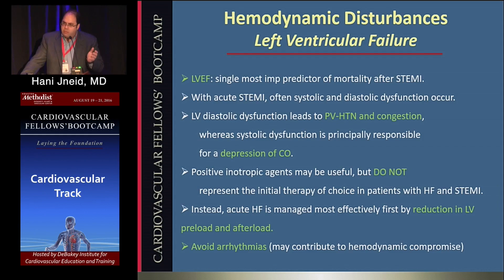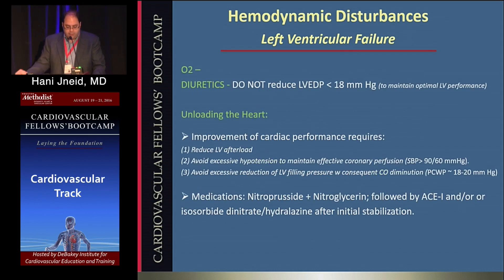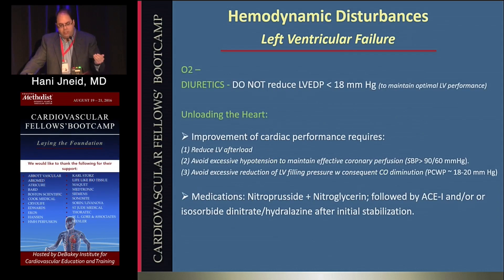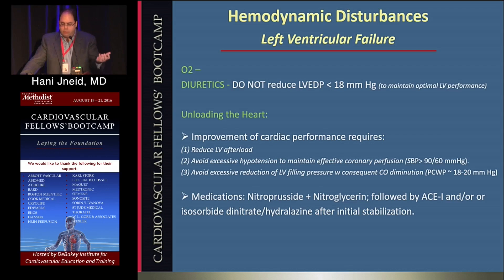When acute heart failure complicates acute MI, positive inotropic agents are not first-line — they are only reserved for very refractory LV dysfunction with ensuing shock. If you have a good blood pressure, you want to unload the heart by reducing preload and afterload while avoiding arrhythmias. Besides mechanical ventilation, oxygenation, and diuresis, avoid excessive hypotension and excessive reduction in LV filling pressure. Maintain systolic blood pressure of around 90 mmHg. Don't diurese below 18 mmHg. Ideally, use the combination of nitroprusside and nitroglycerin, followed by oral agents such as ACE inhibitor and/or nitrates and/or hydralazine.